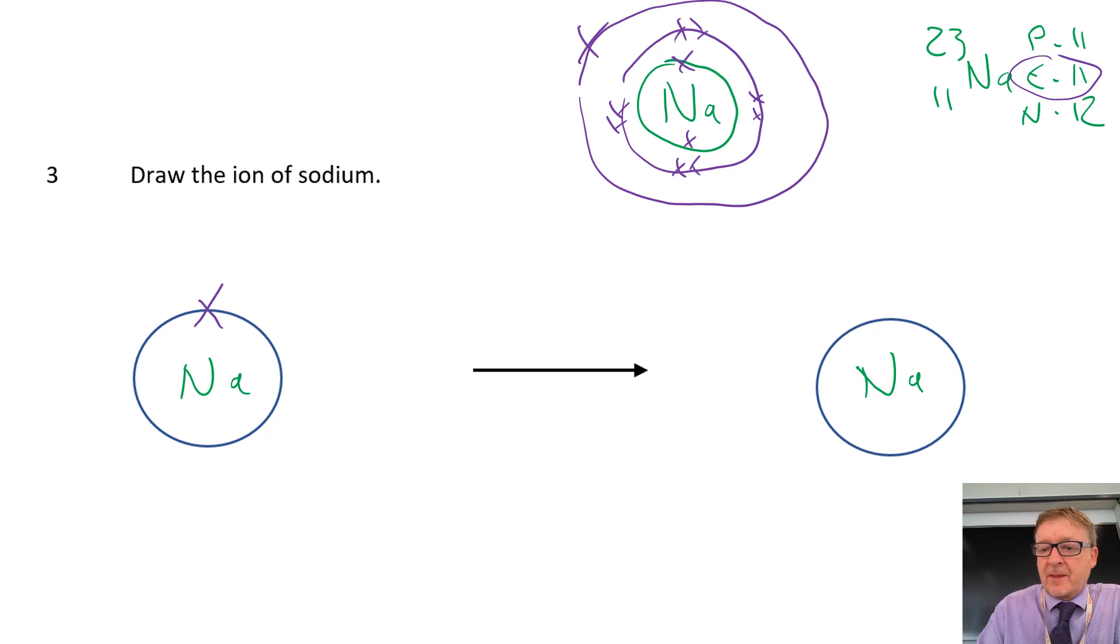I've then got my ion. And now what sodium wants to do, it either wants to gain 7 electrons or it wants to lose 1. And the common sense is the fact that it's going to lose 1, because that's easier. So it loses, so now in that outer shell now, it's got no electrons at all. And what you do is you draw your square bracket around the outside of it. And because it's lost 1 negative, then that means it's got more positives, so it becomes a plus 1.